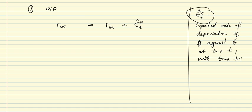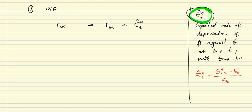E-hat ET denotes a proportional growth rate, and the higher ET, the more depreciated the US dollar. So E-hat ET equals (E_{t+1} - E_t) divided by E_t, where E_t is the exchange rate today and E_{t+1} is the market expectation of what the exchange rate will be one period hence, at the end of this period.